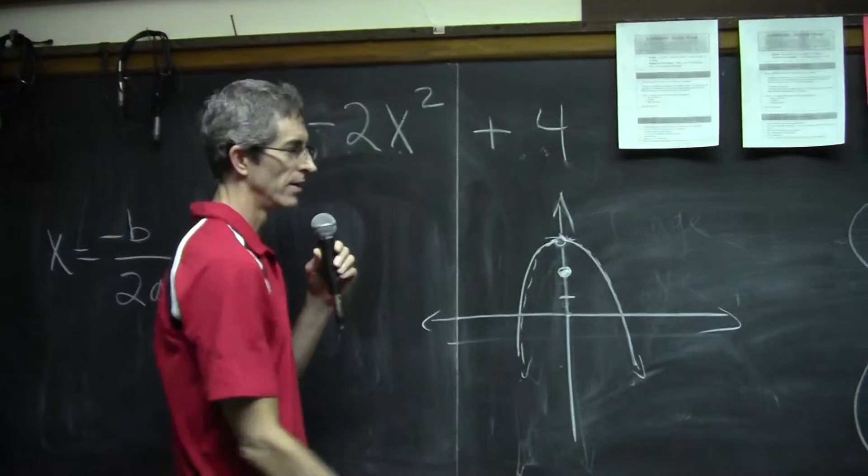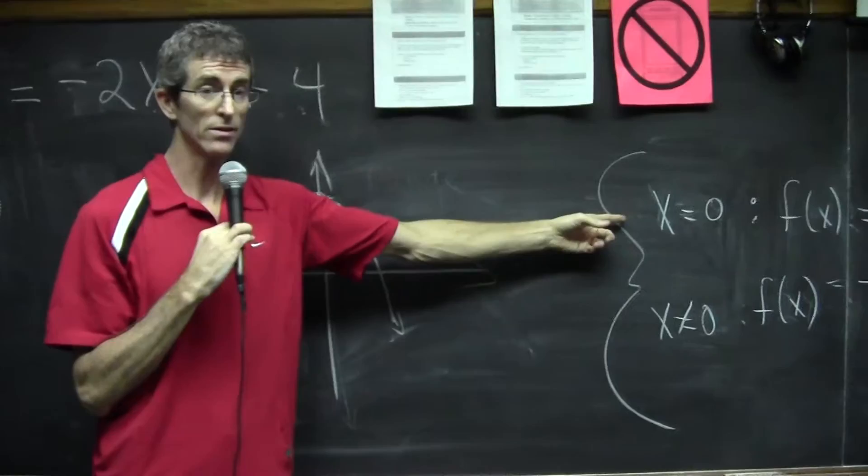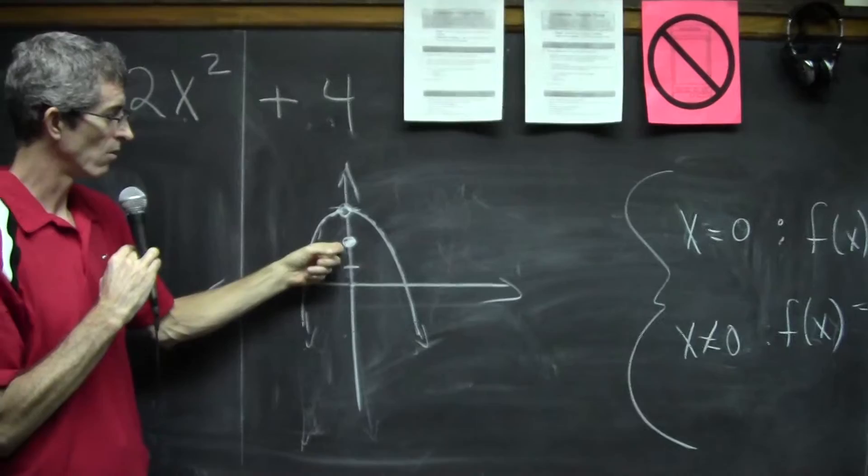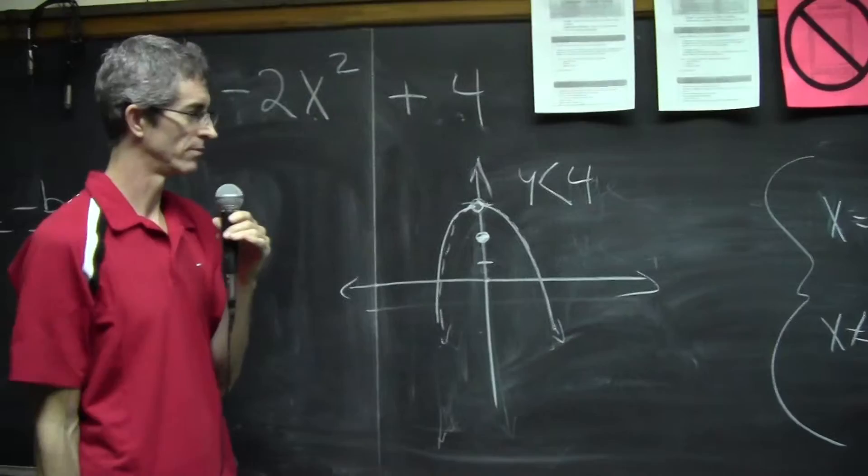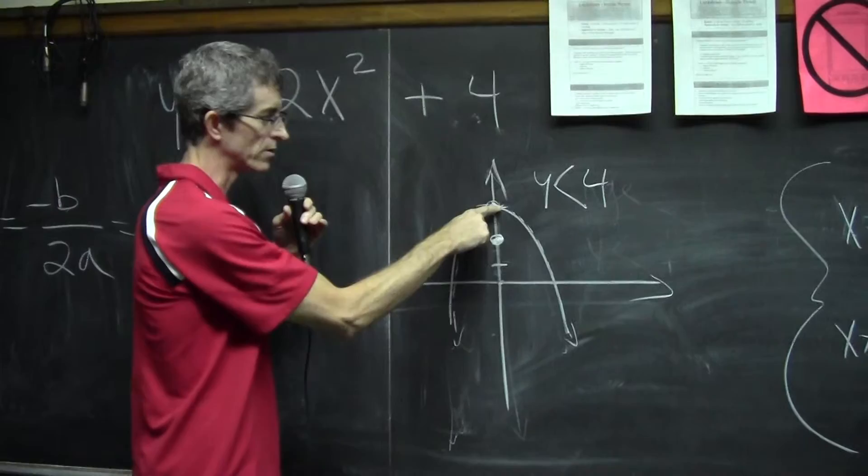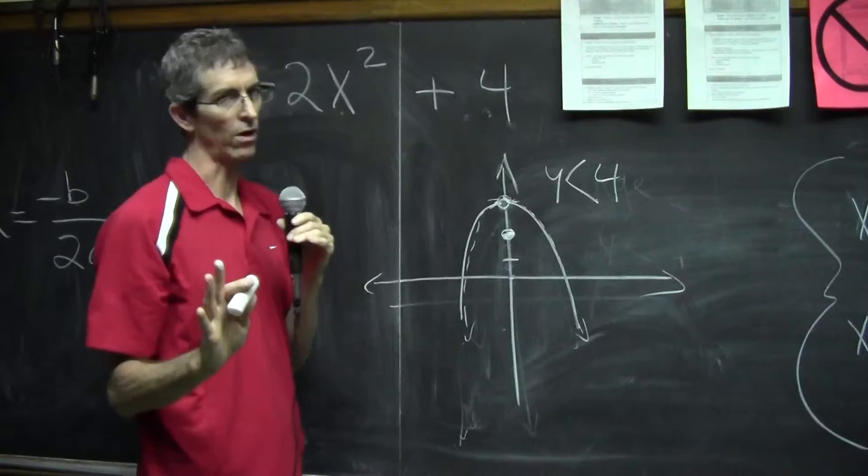The real question is, is 4 part of the range? Since there's an open circle and because of this other function, when they set the problem up that way and said when x=0, y=2, the range is not going to include 4. The range is less than 4. If x is a little bit more, it's 3.999, that's part of the range. So it's everything less than 4, but not 4 itself, because of that weird split function.